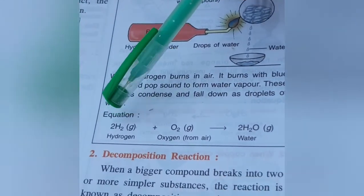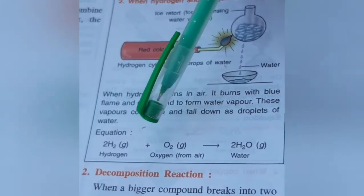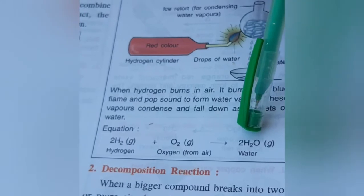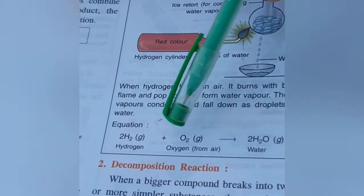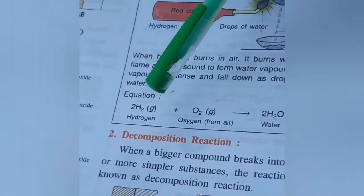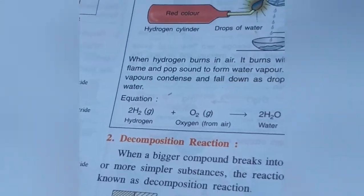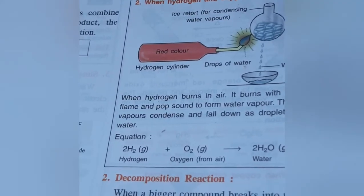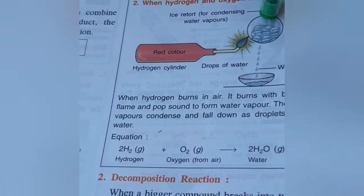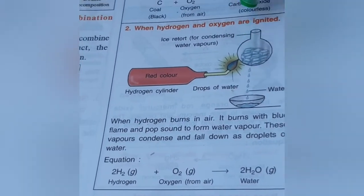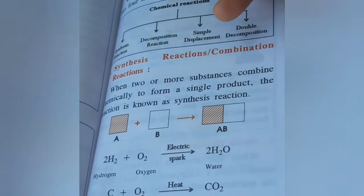The equation is: 2H2 plus O2 equals 2H2O. When heated, some water droplets fall down and some condense as water vapors.